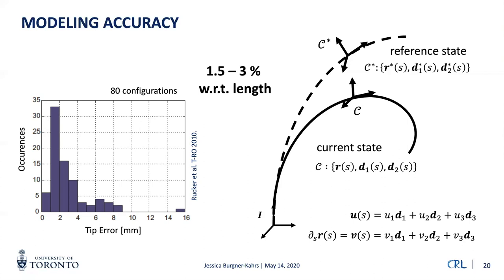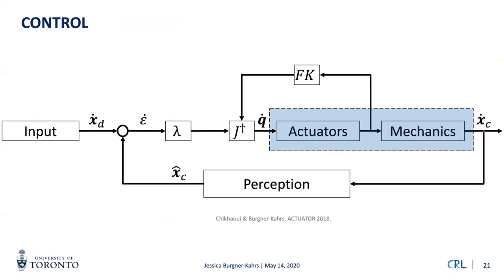However, two millimeters is way too much for a neurosurgical collaborator — two millimeters in the brain can mean the difference between being able to speak or not, to see or not. So that accuracy isn't promising on its own, but when we embed this in a controller with good calibration and some form of feedback and perception, we can actually account for those errors and reduce the modeling error significantly. Using automatic control is really the way to go.